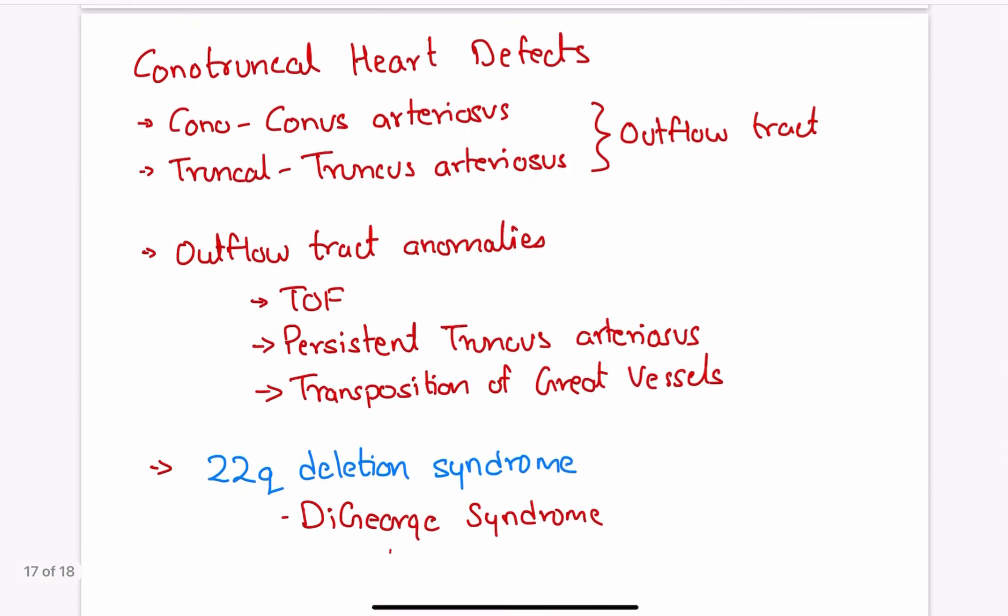Lastly, I'd like to mention a term called conotruncal heart defects. Cono refers to conus arteriosus and truncal refers to truncus arteriosus. Both of these structures form the outflow tract of both right and left ventricles. So defect of these structures forms outflow tract anomalies like Tetralogy of Fallot, persistent truncus arteriosus and transposition of great vessels. Classically, conotruncal heart defects are associated with 22q deletion syndrome like DiGeorge syndrome.